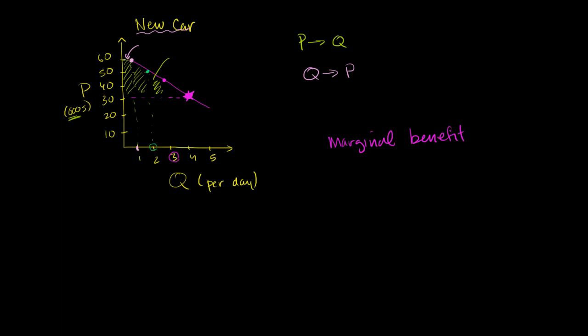In the last video, we saw how you can view a demand curve as a marginal benefit curve. For any given quantity of the good you're selling, that point on the curve is showing the marginal benefit for that incremental unit. So this is the marginal benefit for that first unit. This is the marginal benefit for that second unit.